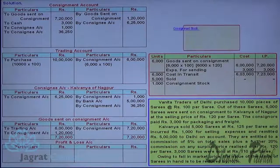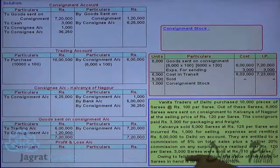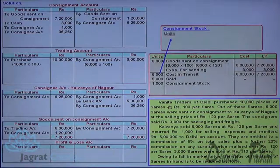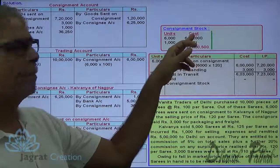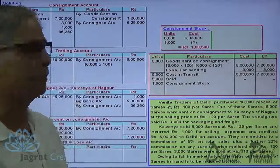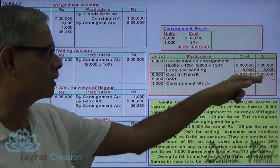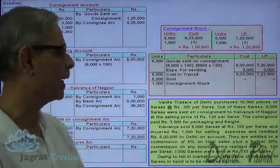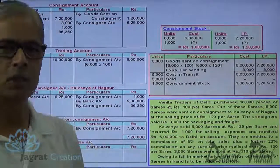Out of 6,000 sarees, 5,000 were sold, so 1,000 is the consignment stock. Let me work out the consignment stock. 6,000 units cost is ₹6,03,000, so for 1,000 units: 6,03,000 into 1,000 divided by 6,000 gives the unit cost. To find the invoice price: 6,000 units invoice price is ₹7,23,000, so for 1,000 units that works out to ₹1,23,000. I will now write down this cost and invoice price, which are to be reduced by 10% later.